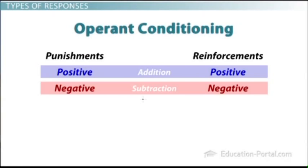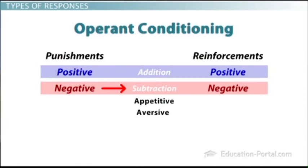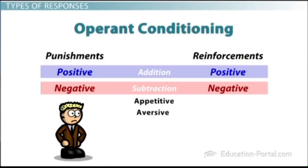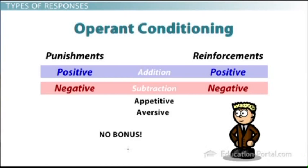What positive and negative mean here is that you're adding or subtracting a stimulus. Psychologists describe stimuli as either appetitive — a good thing — or aversive — a bad thing. Positive means the addition of one of these things; negative means the taking away of one of them. For example, if you used to get a bonus and now you don't, that's a negative punishment — something good was taken away.